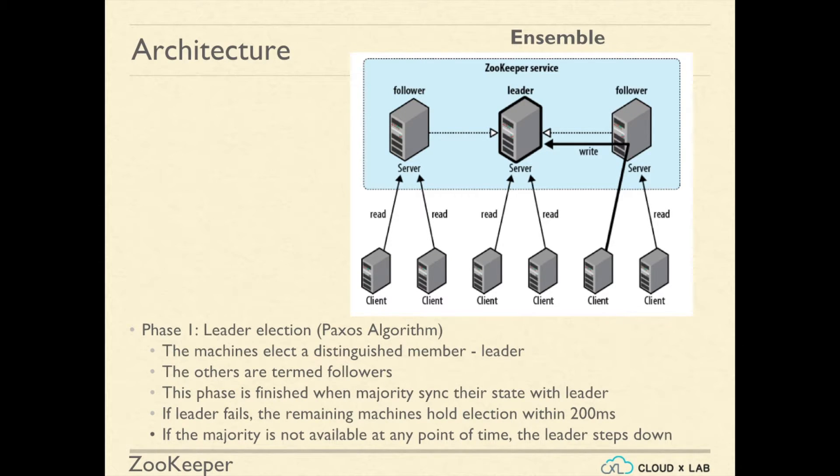As soon as the Zookeeper servers on all the machines in the Ensemble are turned on, Phase 1, which is the Leader Selection Phase, starts. This election is based on Paxos algorithm. The machines in the Ensemble vote for each other based on the ping responses and freshness of data.